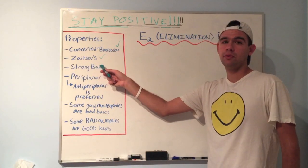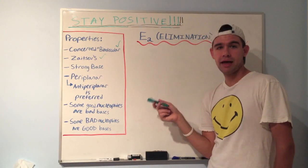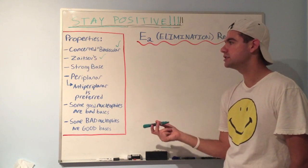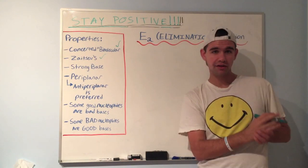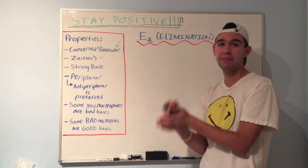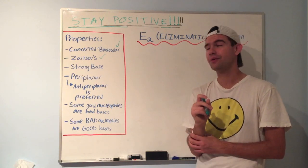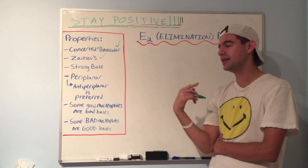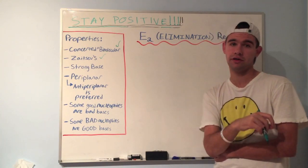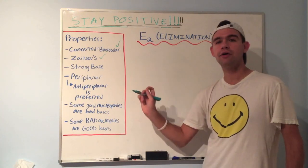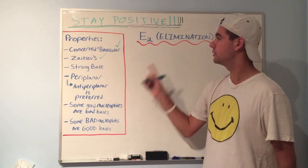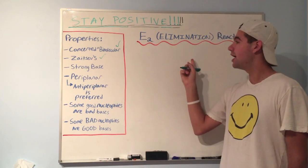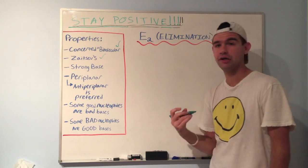Strong base. This is a really important point. Every E2 mechanism requires a strong base. Just like SN2 requires a strong nucleophile, E2 requires a strong base. And those aren't the same thing. Not every strong nucleophile is a strong base, and not every strong base is a strong nucleophile. So just for now, keep in mind that you need a strong base, which is why I chose methoxide for that example. It's a very strong base.